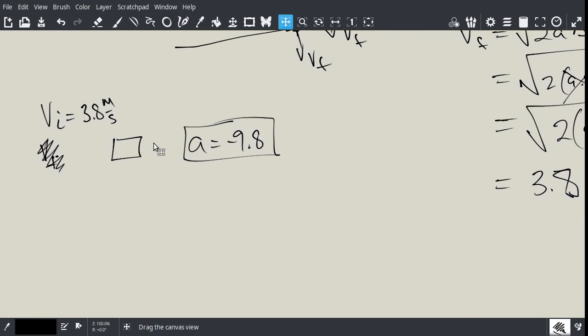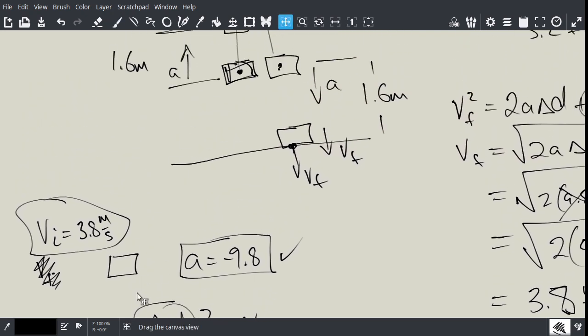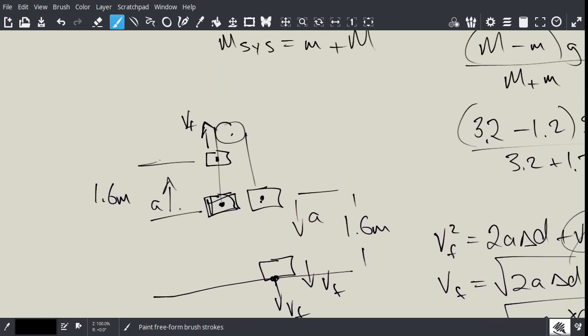So the question is, so as it stands now, the little mass has gone up 1.6 meters as this one, as the big one, has come down 1.6 meters. So how much further does the little guy go up simply due to its initial velocity being tossed up and then only with gravity? So now it becomes a much simpler problem.